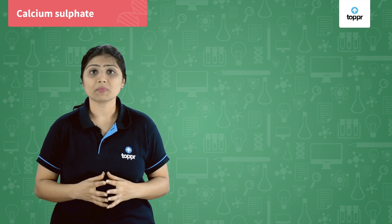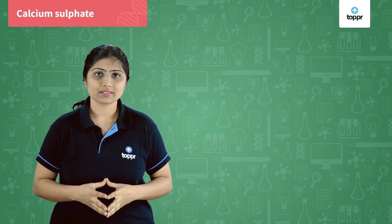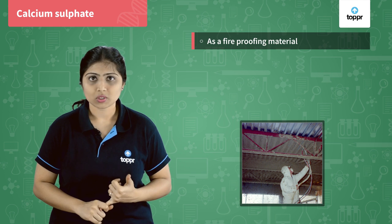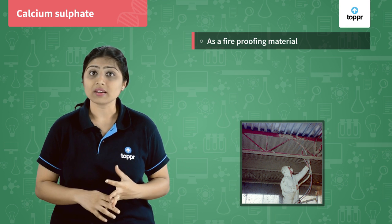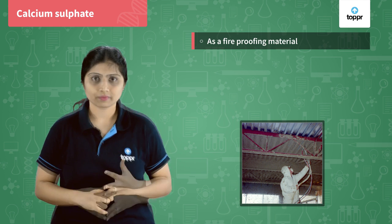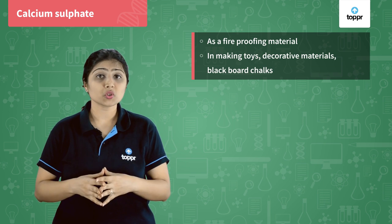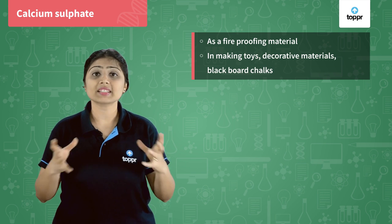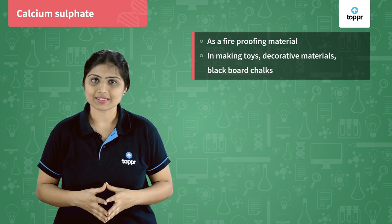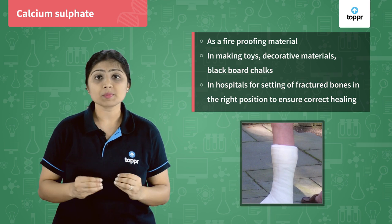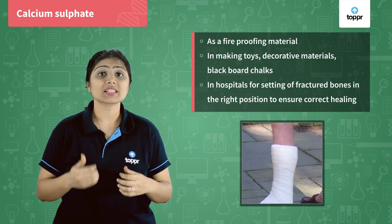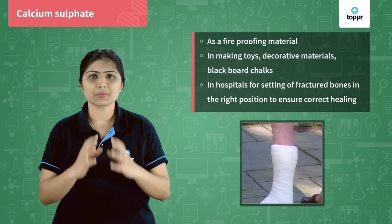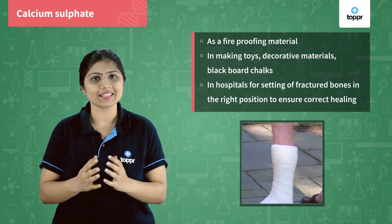Let us see what are the uses of plaster of Paris. Plaster of Paris is used as a fireproofing material because it doesn't catch fire, so it is applied on ceilings. It is also used in making toys, sculptures, and many decorative materials. Even in hospitals, plaster of Paris is used for setting fractured bones in the right position to ensure correct healing.